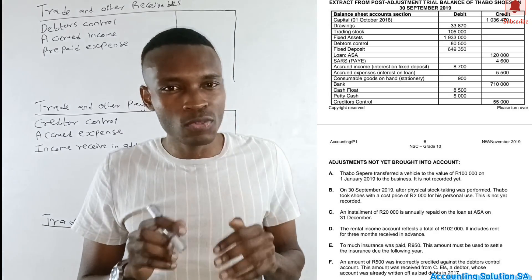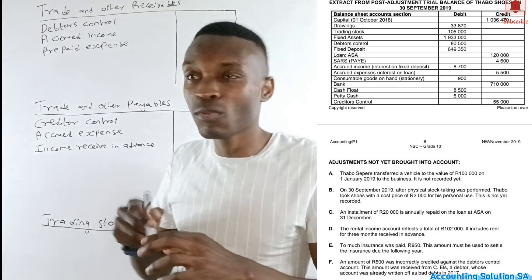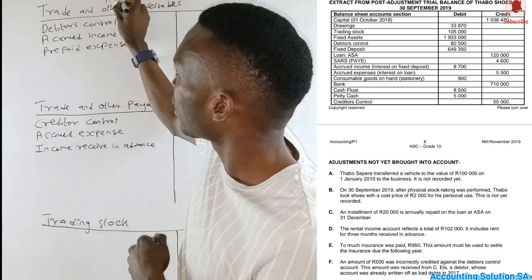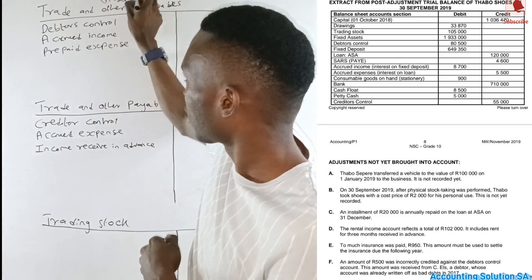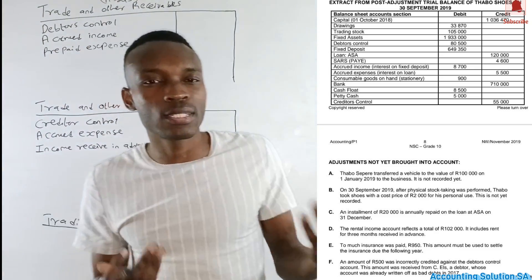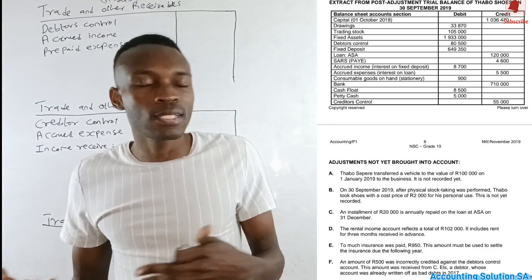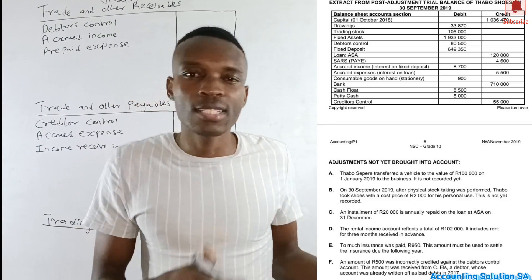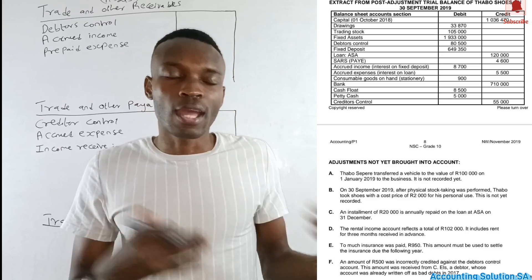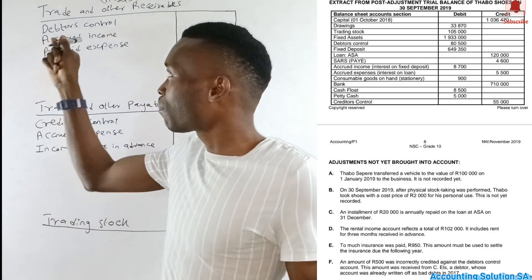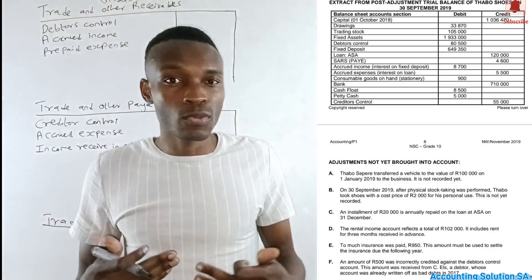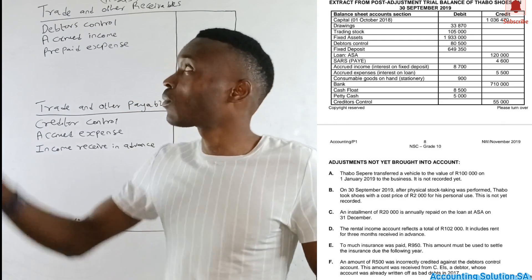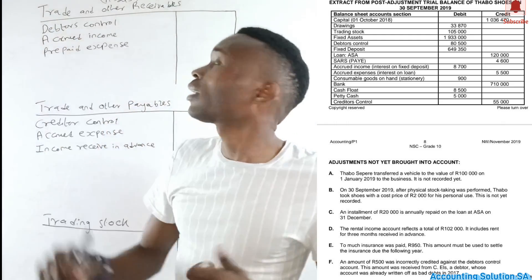Trading other receivables is an asset. An asset is a resource — simply put, it is an item that the company owns. These people owe us money and we can demand it back, which is why it falls under trading other receivables as an asset.